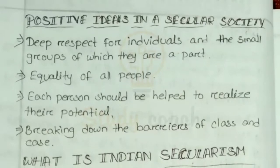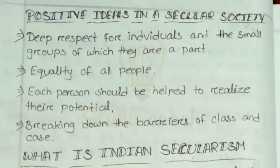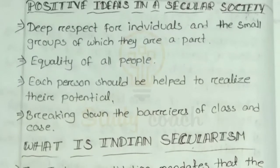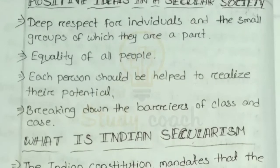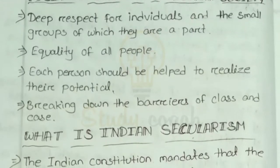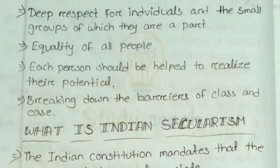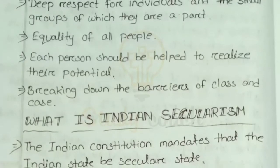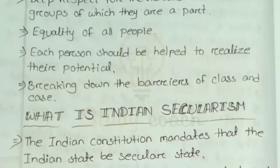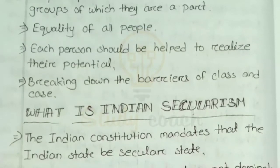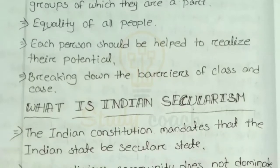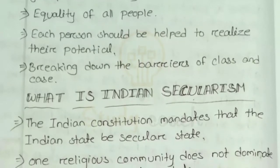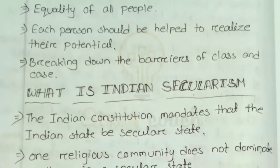Next, some positive ideas in secularism and in a secular society. First, there is deep respect for individuals and the small groups of which they are a part — each and every individual gets the same respect and equal rights, whether they belong to a small group or a majority group. Second, equality of all people — all people are equal. Third, each person should be helped to realize their potential. Fourth, breaking down the barriers of class and caste.